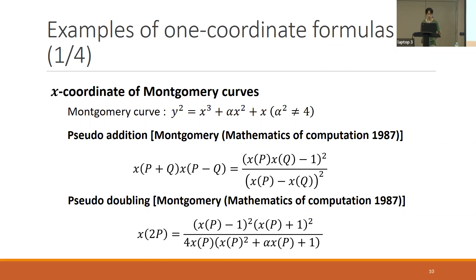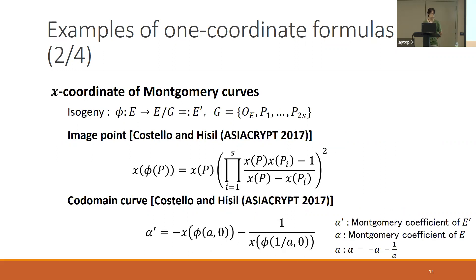Alpha is a coefficient of the Montgomery curve, and we call this the Montgomery coefficient. By using these two formulas, we can compute the scalar multiplication. Next are formulas for computing isogenies: the first is a formula for image points, computing the x-coordinate of phi(P) from x-coordinates of P and points in the kernel. The second is a formula for the quotient curve, computing the Montgomery coefficient of E/G from the Montgomery coefficient of E and x-coordinates of kernel points. So all four formulas can be computed using the x-coordinate of the Montgomery curve.